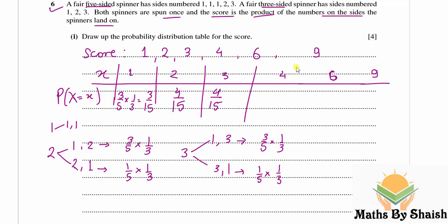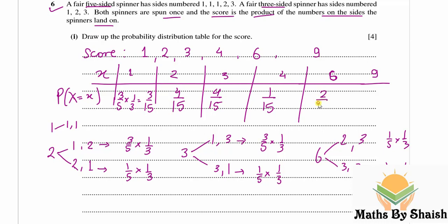For X=4, the only possibility is 2×2, so P(X=4) = 1/5 × 1/3 = 1/15. For X=6, it can be 2×3 or 3×2: 1/5 × 1/3 + 1/5 × 1/3 = 2/15. For X=9, it is 3×3: 1/5 × 1/3 = 1/15. This completes the probability distribution table for the score.